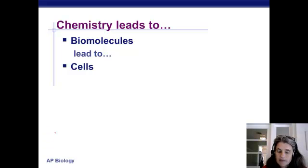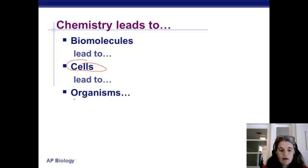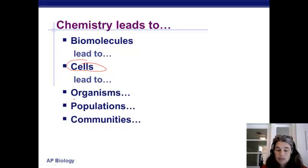Certainly you can get smaller than a cell, but whatever you get will not be alive. Cells are the fundamental units of living things. But you put a bunch of cells together and then you're going to get tissues, organs, organ systems, organisms, and then all those things that we just talked about in our ecology unit.